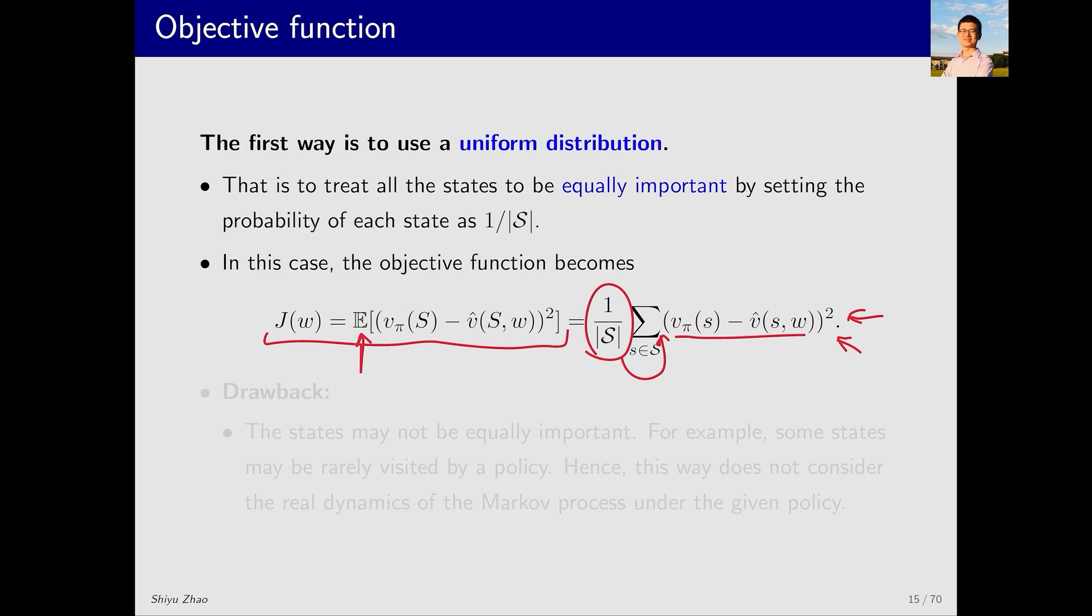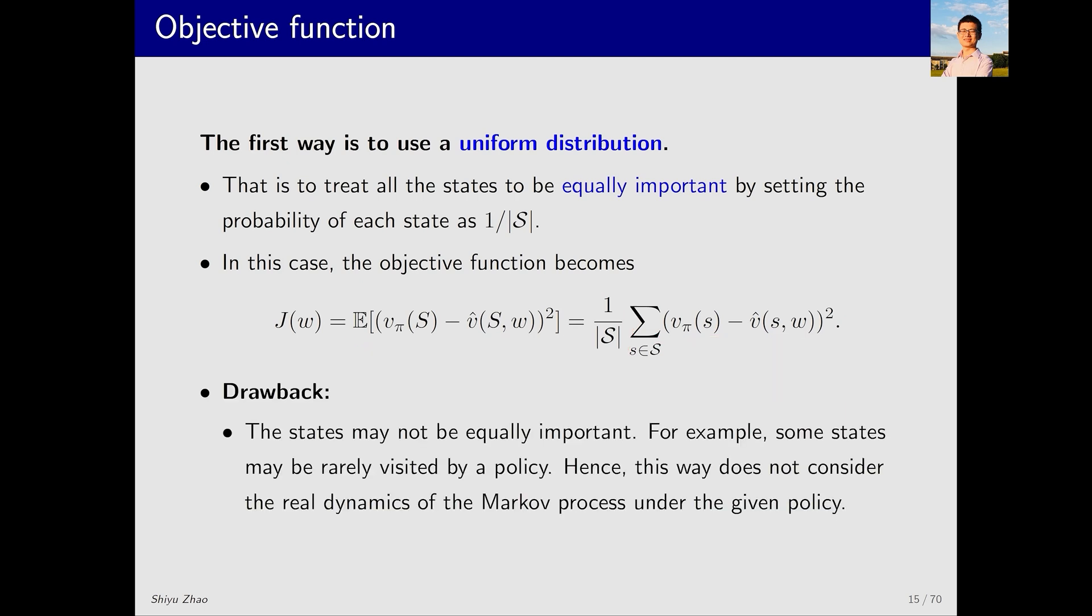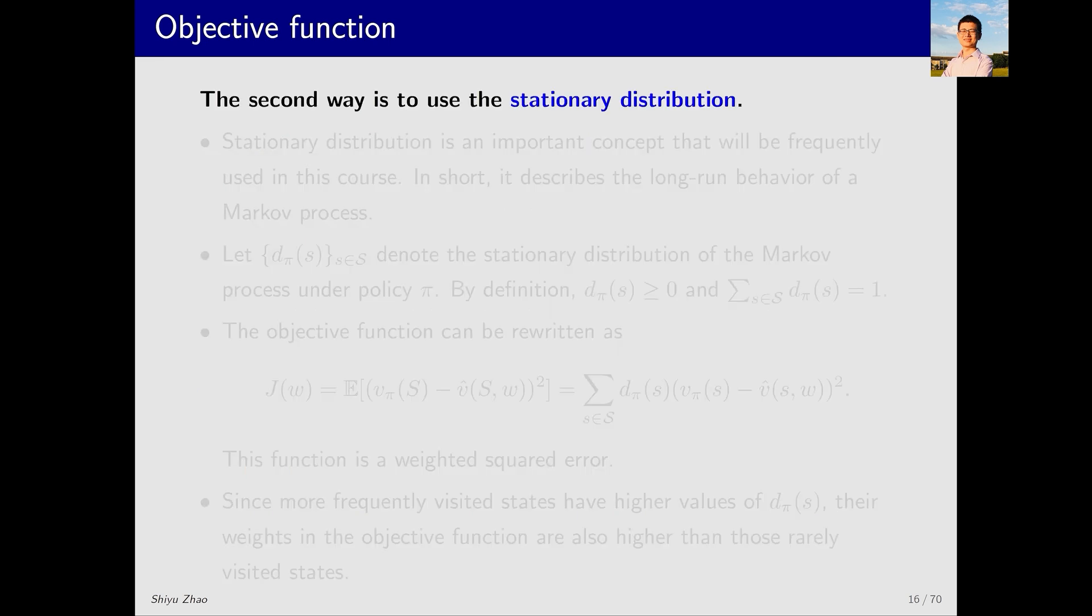Although this uniform distribution is very intuitive, there is a problem here. That is, it assumes that all states are equally important, which might not actually be the case. For example, if my goal is to start from a certain state and reach a target state, then the target state and states close to it are more important. Conversely, some states that are very far from the target state may be less important. We hope to give more weight to those important states. As a result, the estimation errors for these important states will be smaller. For the less important states, their weights are smaller. Even if their estimated errors are larger, it doesn't matter much because the agent might not visit them at all. With this idea in mind, we introduce the second probability distribution, the stationary distribution, which is widely used in value function methods.